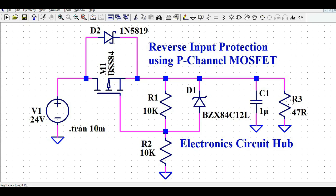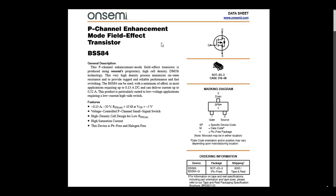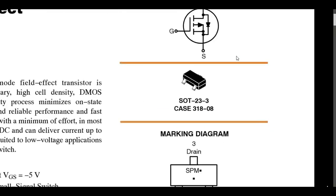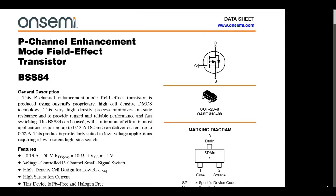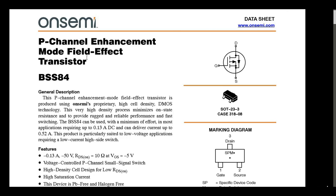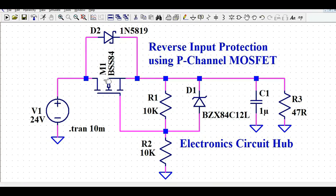Looking at the VSS84 datasheet, this is a P-channel enhancement mode field effect transistor. The symbol shows gate, source, and drain. The body diode has its anode connected to the drain and cathode connected to the source. I'm keeping an external diode connected for now.